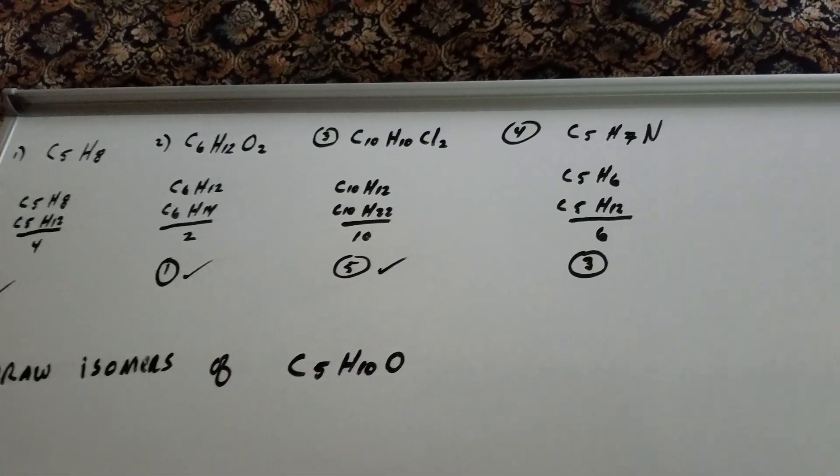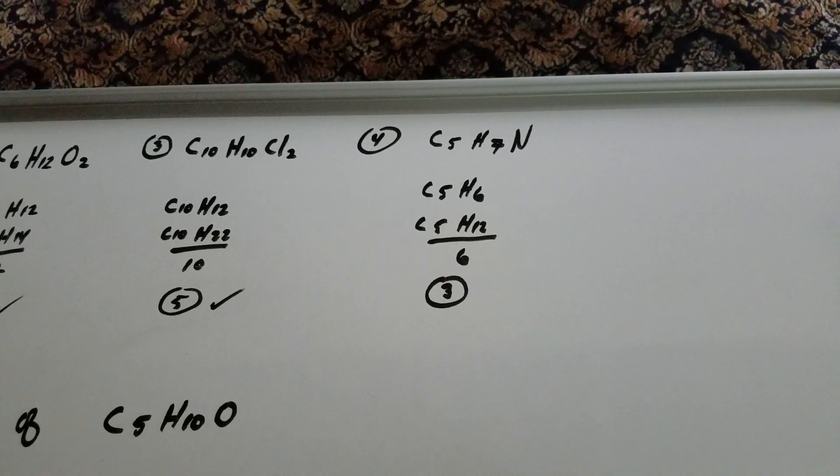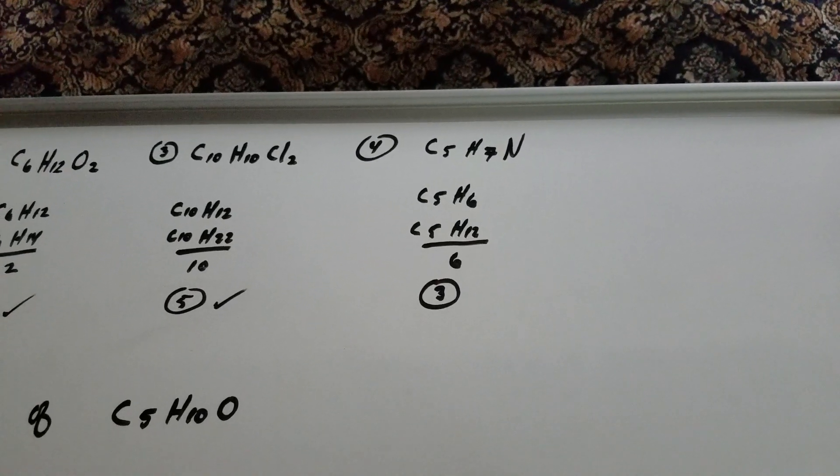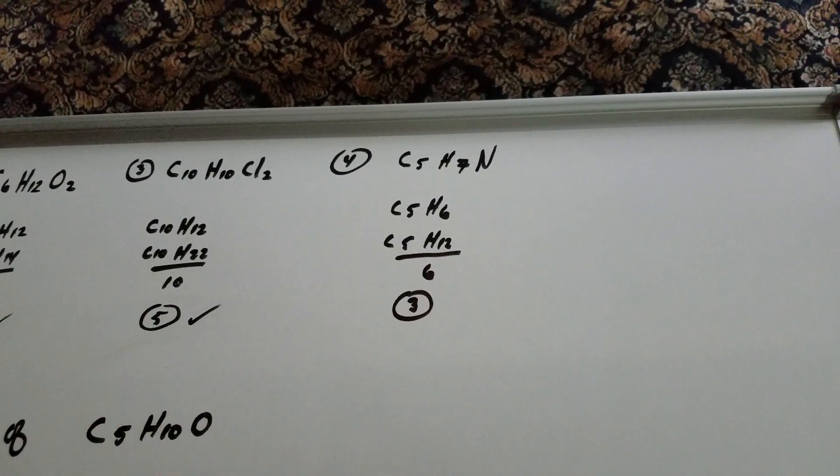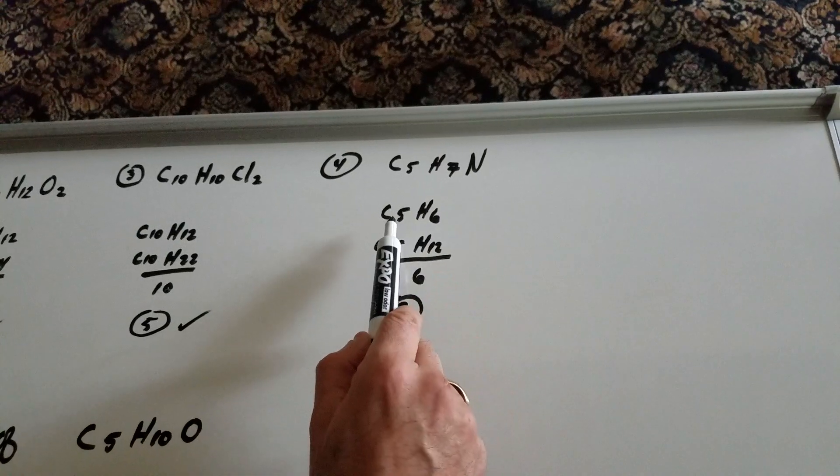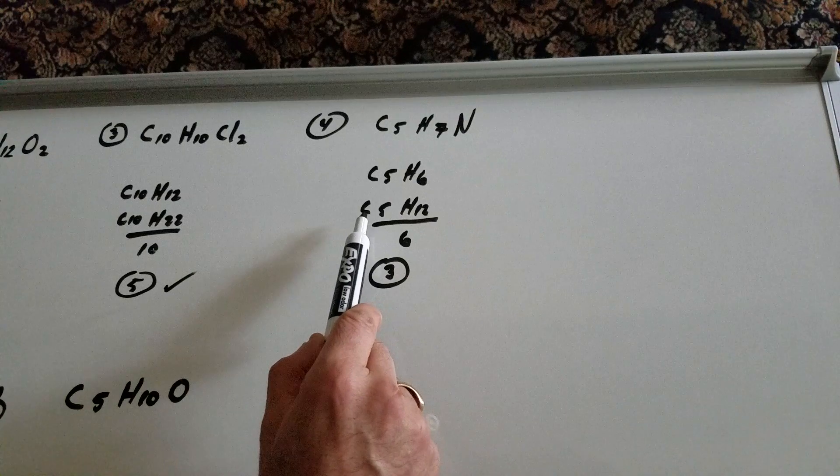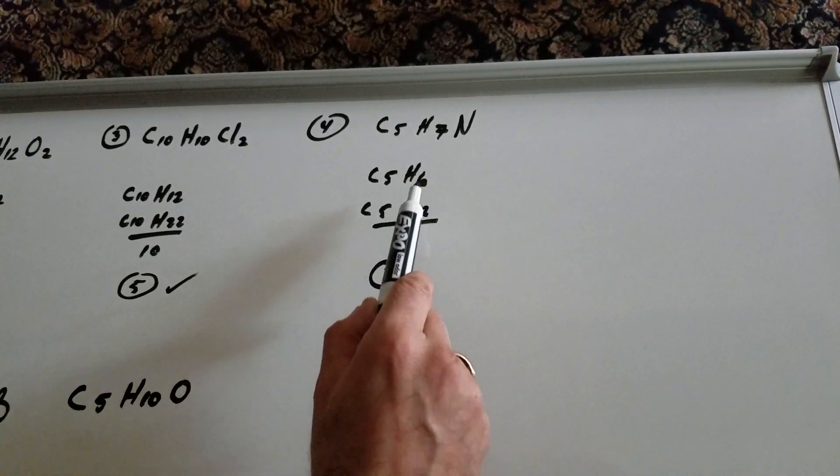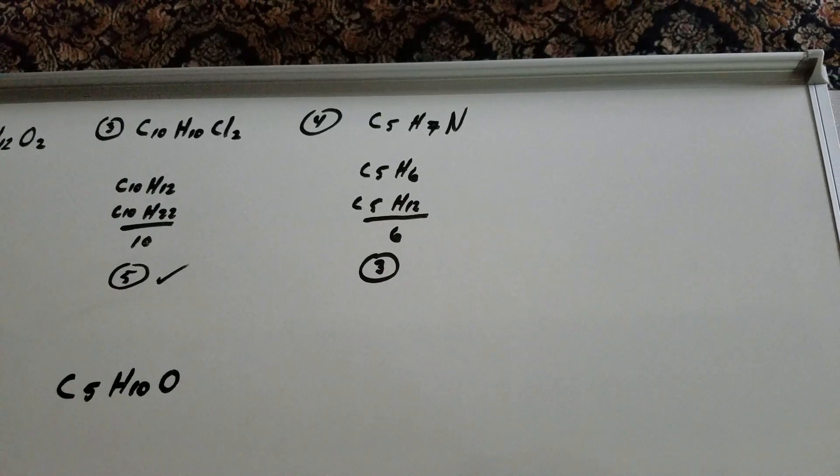Final case. What if there's a nitrogen? If there's a nitrogen present, you're going to subtract one hydrogen for every nitrogen. So C5H7N, you're going to think of it as a C5H6. Underneath is the nearest alkane, C5H12. Subtract, you get six, and cut it in half.